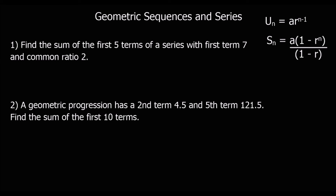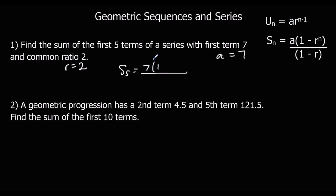Find the sum of the first five terms of a series. Using the sum formula: the first term a = 7, common ratio r = 2. So S5 equals 7 multiplied by (1 - 2^5) / (1 - 2). Typing it into the calculator gives us 217.